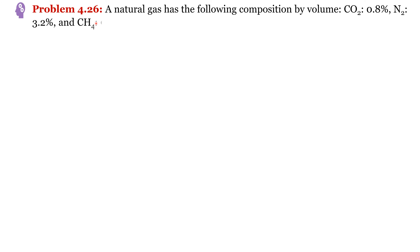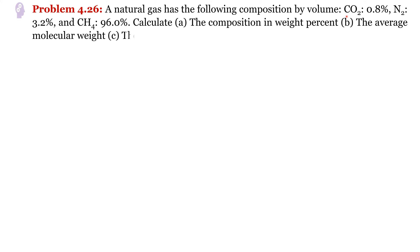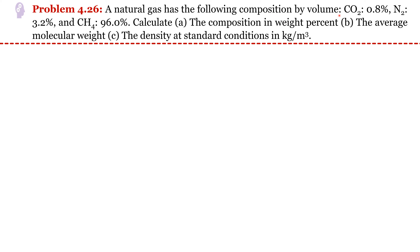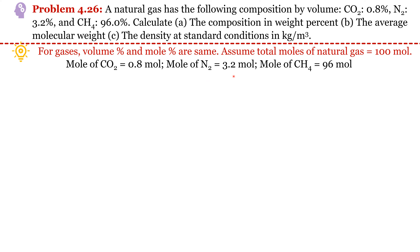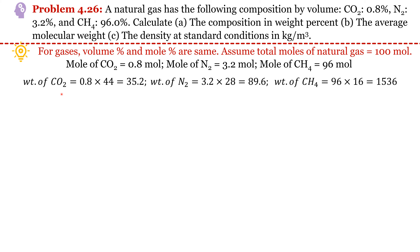Problem 4.26: A natural gas has the following composition by volume. For gases, volume percentage and mole percentage are the same. We assume total moles of natural gas equals 100 mol. Moles of CO₂ = 0.8, moles of N₂ = 3.2, and moles of CH₄ = 96. We then estimate the weight of individual components.